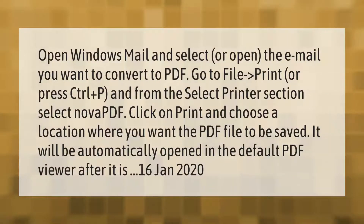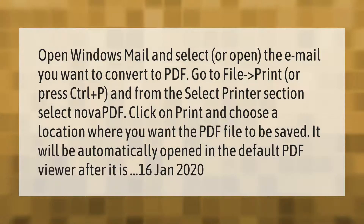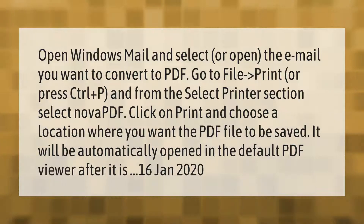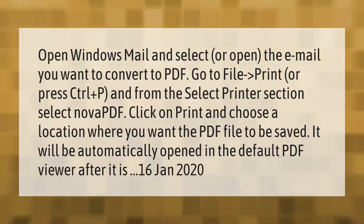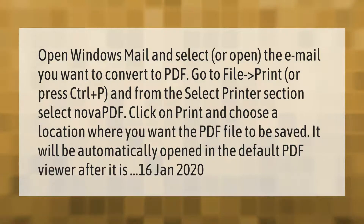Open Windows Mail and select or open the email you want to convert to PDF. Go to File, then Print, or press Ctrl+P. From the Select Printer section, select Nova PDF. Click Print and choose a location where you want the PDF file to be saved. It will be automatically opened in the default PDF viewer.